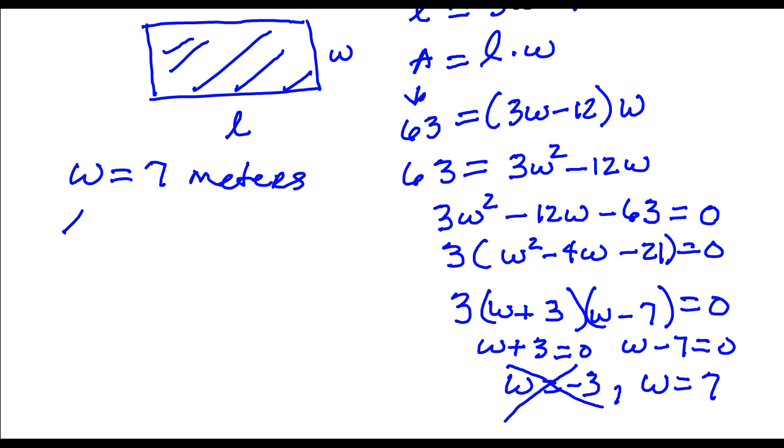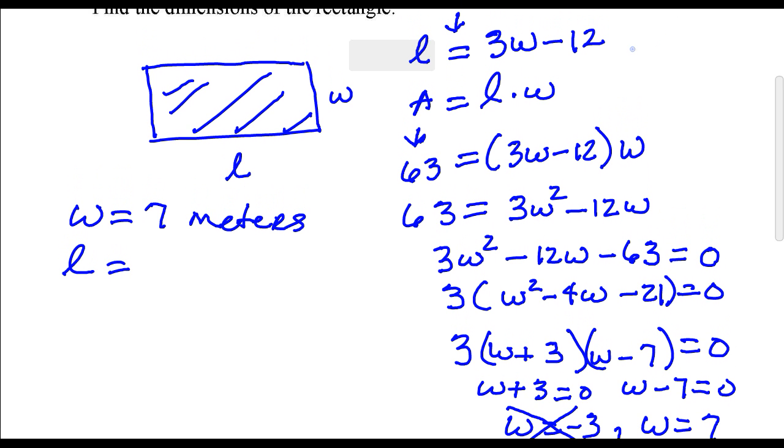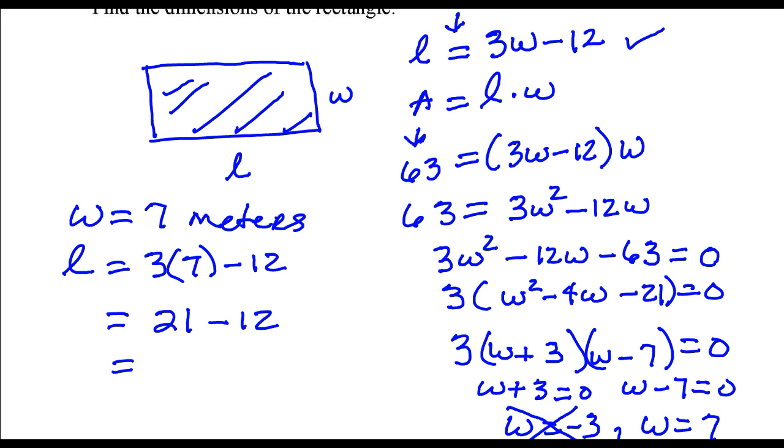Okay, the length, well if we look back up here at this first equation that we came up with, the length is 3 times W minus 12. So in our case it would be 3 times 7 minus 12. That's 21 minus 12. So the length of this rectangle is 9 meters. And those are the dimensions of this rectangle.